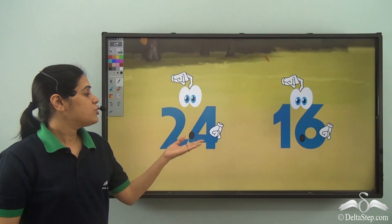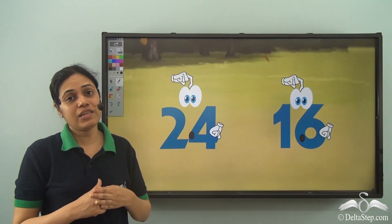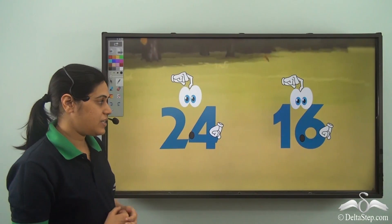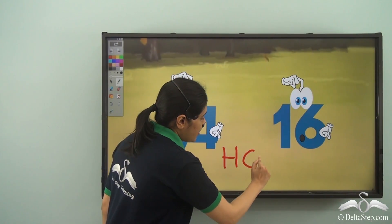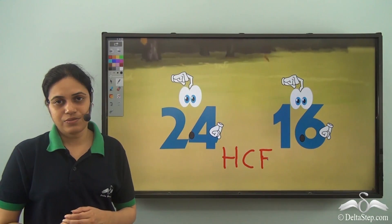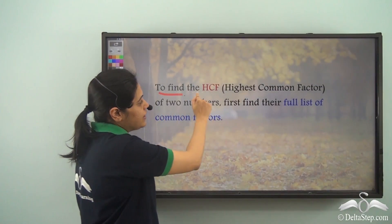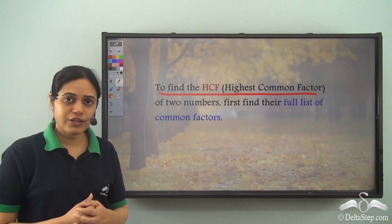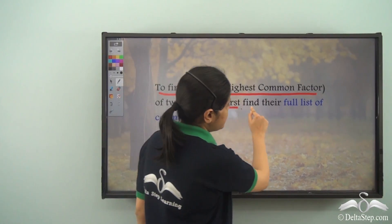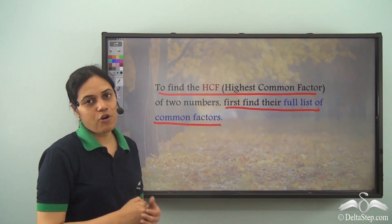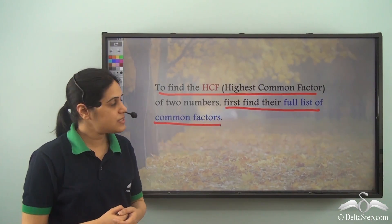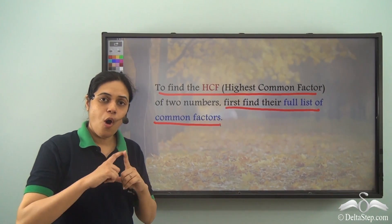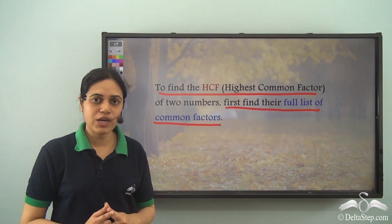Let's say 24 and 16 want to find their HCF — their highest common factor. To find the HCF of two numbers, first find their full list of common factors. That is, to find the HCF of two numbers, I first need to find all the common factors of those two numbers.